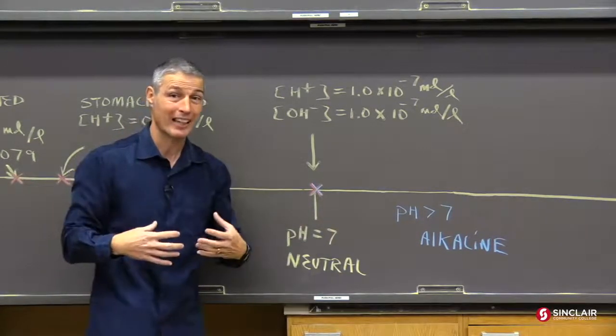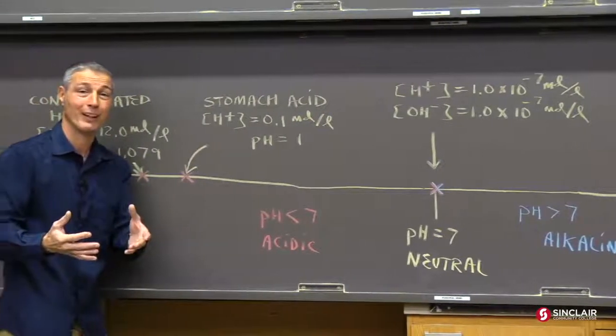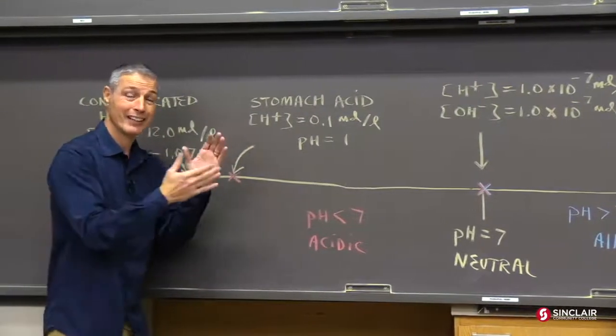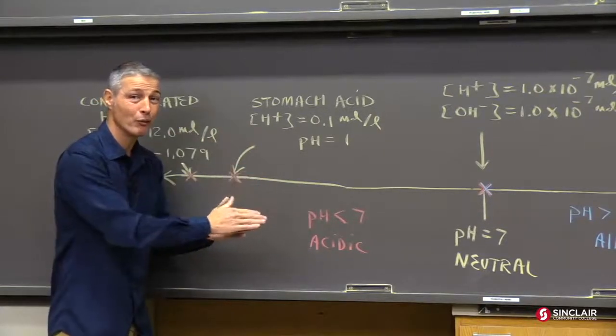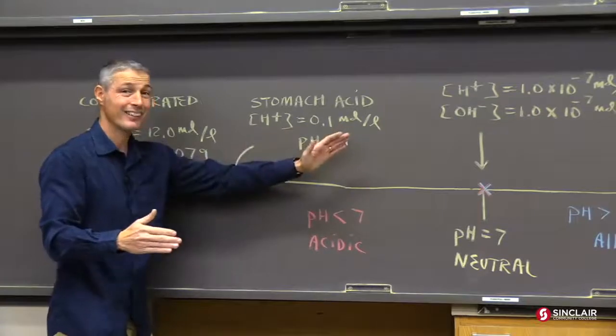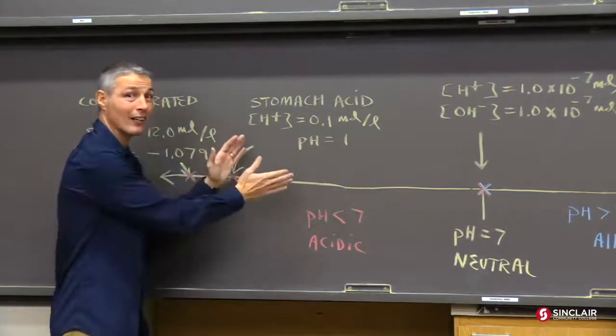Let's take another example like your stomach acid. Your stomach acid has a concentration of 0.1. Log of that's negative 1. That's a pH of 1 in your stomach acid. So the lower the number goes, the more acidic.